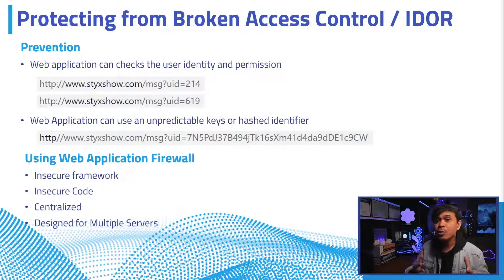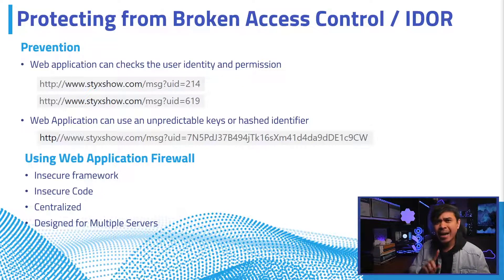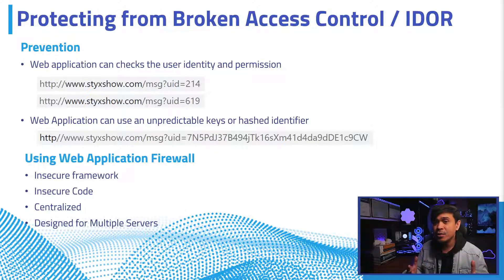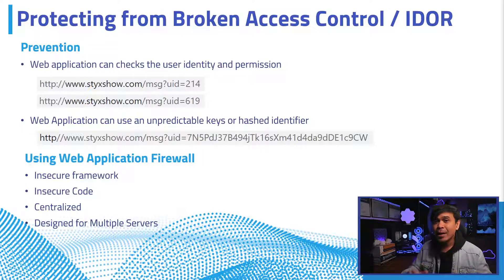Second, the web application can also use unpredictable keys or hash identifiers and reference them to the user's resources. Hashing is a one-way process that translates a long value into a string. This hash value consists of the user ID and secret keys with a secured algorithm. This would make the attacker's life a little harder, as it would be extremely difficult to guess such a long random value.